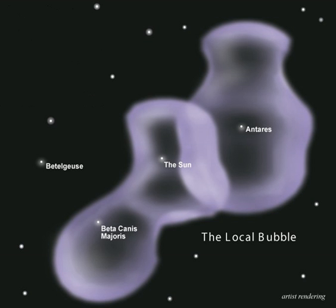The local bubble, or local cavity, is a relative cavity in the interstellar medium of the Orion arm in the Milky Way. It contains, among others, the local interstellar cloud, which contains the solar system, and the G-cloud. It is at least 300 light-years across and is defined by its neutral hydrogen density of about 0.05 atoms per cc, approximately one-tenth of the average for the ISM in the Milky Way at 0.5 atoms per cc, and one-sixth that of the local interstellar cloud at 0.3 atoms per cc.